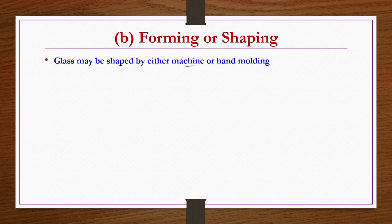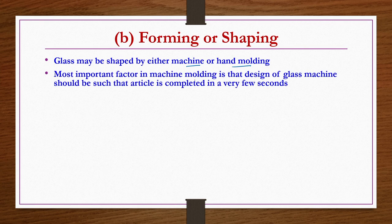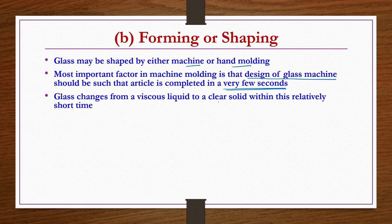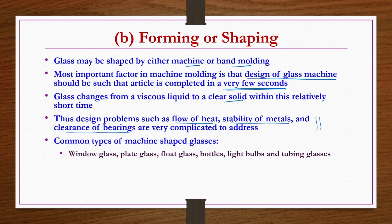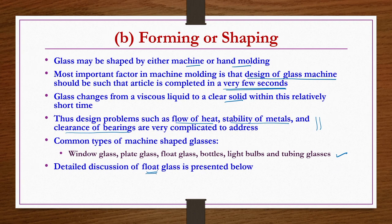Now we see the second step: forming or shaping. Glass may be shaped either by machine or by hand molding. The most important factor in machine molding is that the article must be completed in very few seconds, because glass changes from a viscous liquid to a clear solid within that short time. Design problems such as flow of heat, stability of metals, and clearance of bearings are very complicated to address. Common types of machine-shaped glasses are window glass, plate glass, float glass, bottles, light bulbs, and tubing glasses.